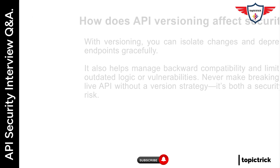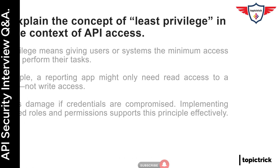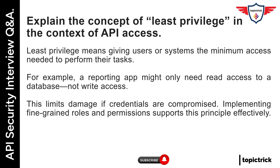Explain the concept of least privilege in the context of API access. Least privilege means giving users or systems the minimum access needed to perform their tasks. For example, a reporting app might only need read access to a database, not write access. This limits damage if credentials are compromised. Implementing fine-grained roles and permissions supports this principle effectively.